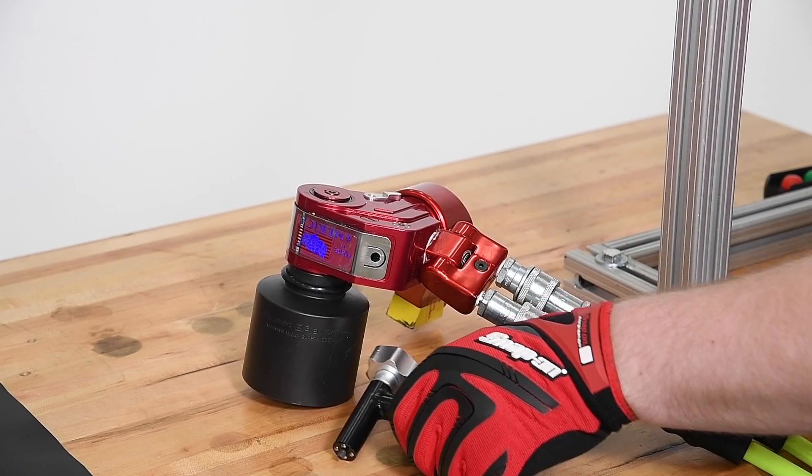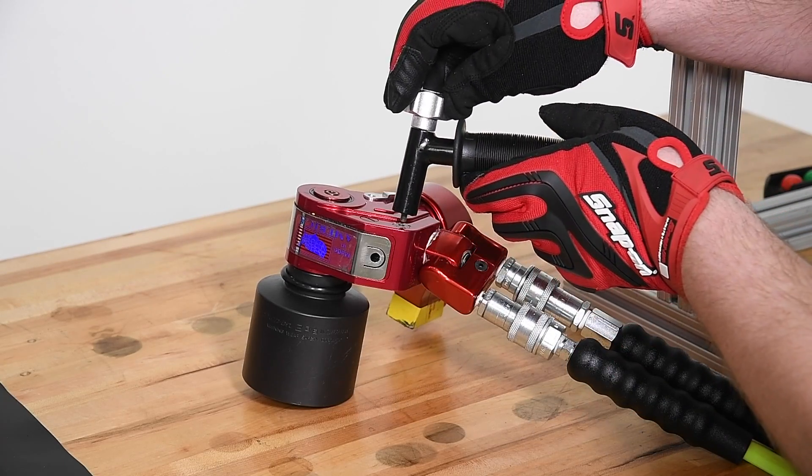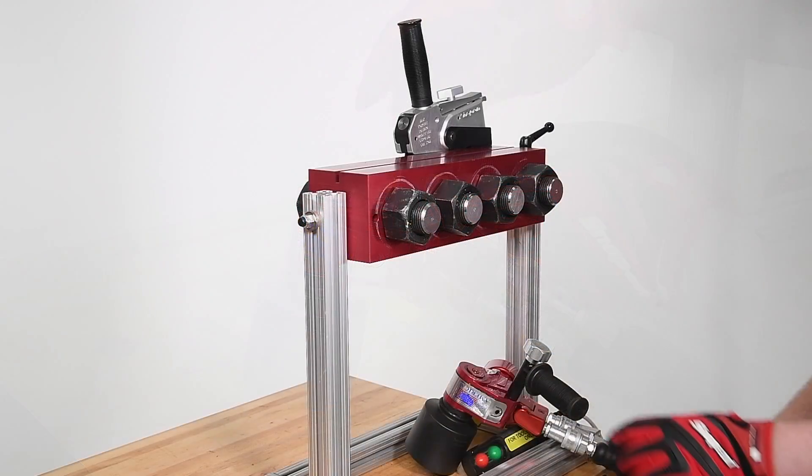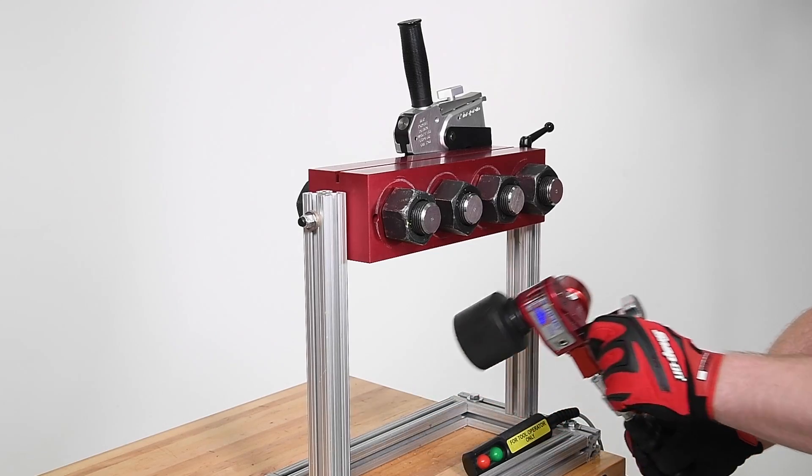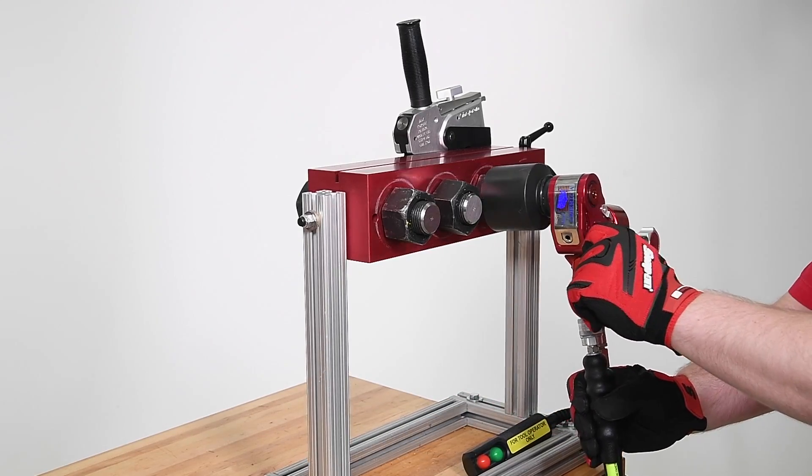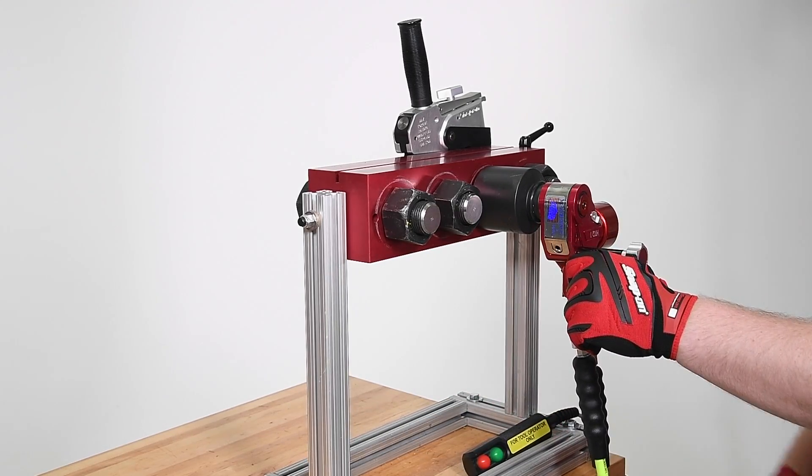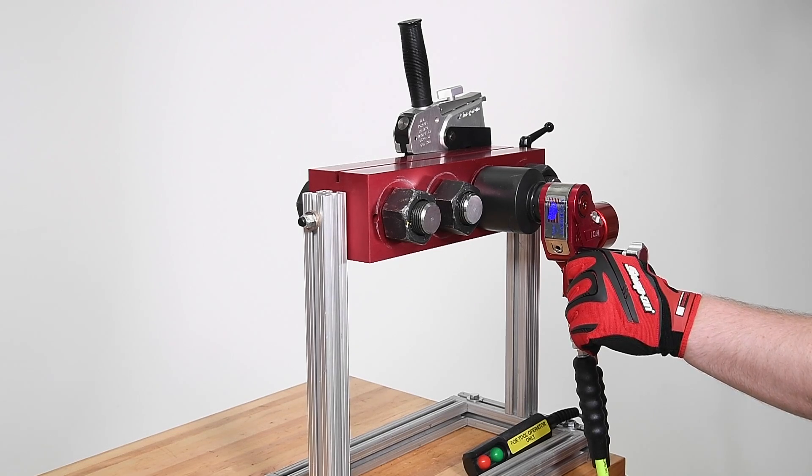Next, attach the removable handle by threading it into the body of the wrench. Using the removable handle, place the wrench on the fastener with the reaction arm against a solid blocking surface. In this case, we're using the adjacent fastener.